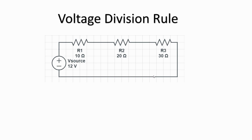In a series circuit the voltage is divided between each component based on the resistances. We are going to arrive at a formula called the voltage division rule, which can be simply applied to any series circuit to find out the voltage drop across any component.